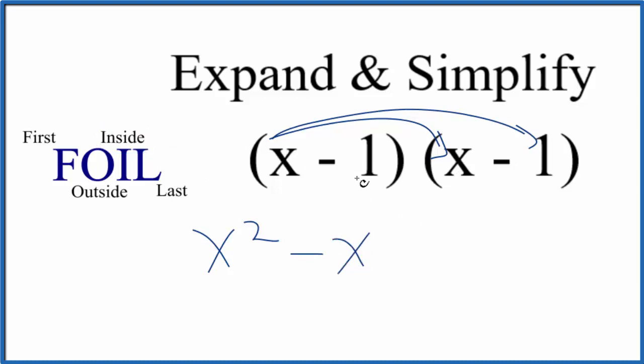Then we go to the inside, negative 1 times x, that gives us another negative x. And then the last term, negative 1 times negative 1, that gives us a positive 1.